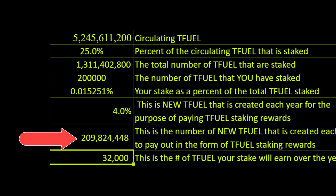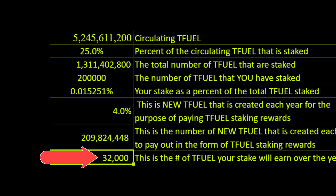This next number is the number of newly minted TFuel for the purposes of paying out TFuel rewards — that is the four percent figure. This figure represents your portion of the TFuel rewards based on the amount of TFuel you have staked as related to the total amount of TFuel. So you'd be earning 32,000 TFuel in the form of staking rewards.